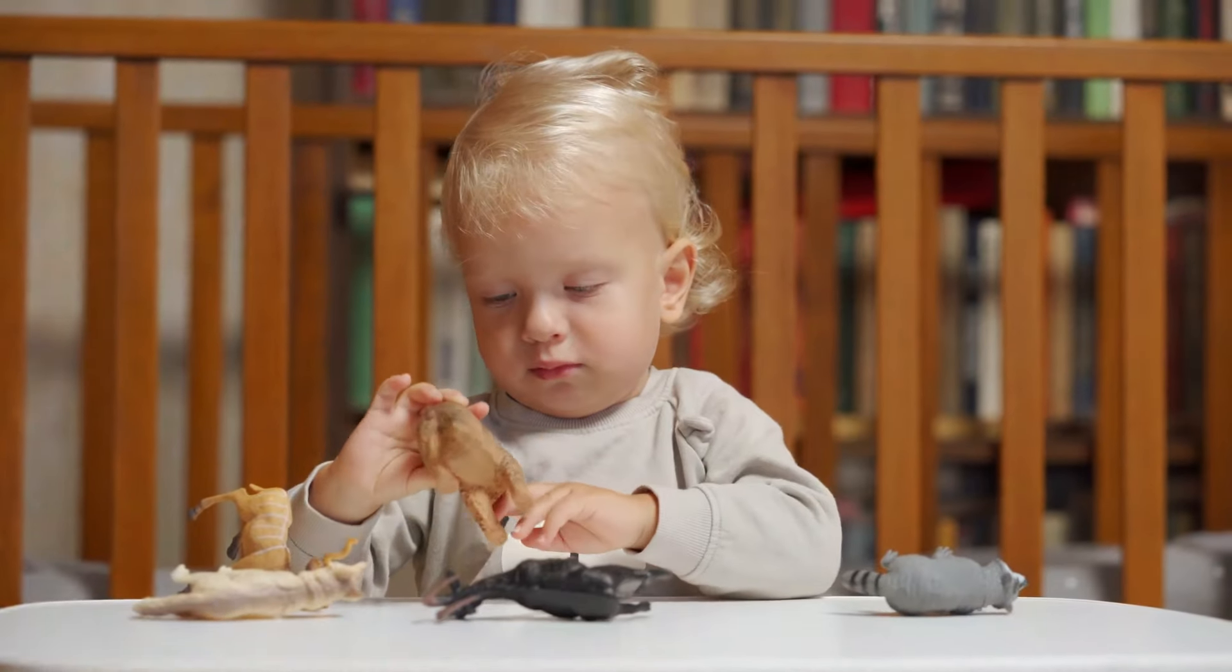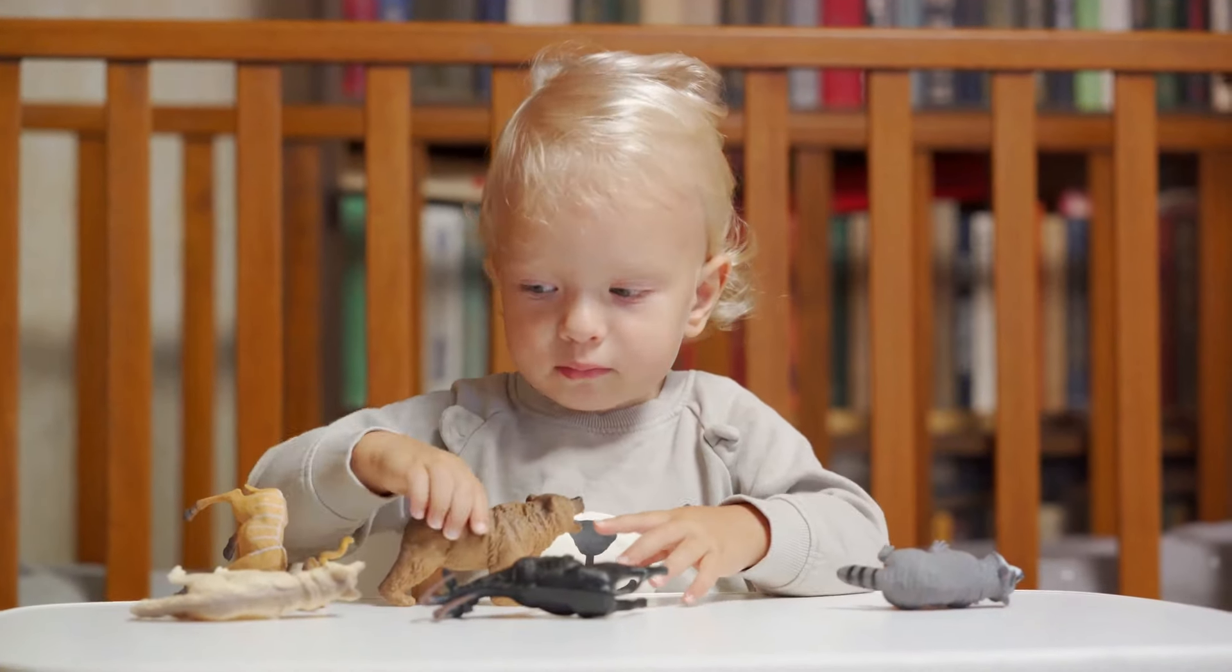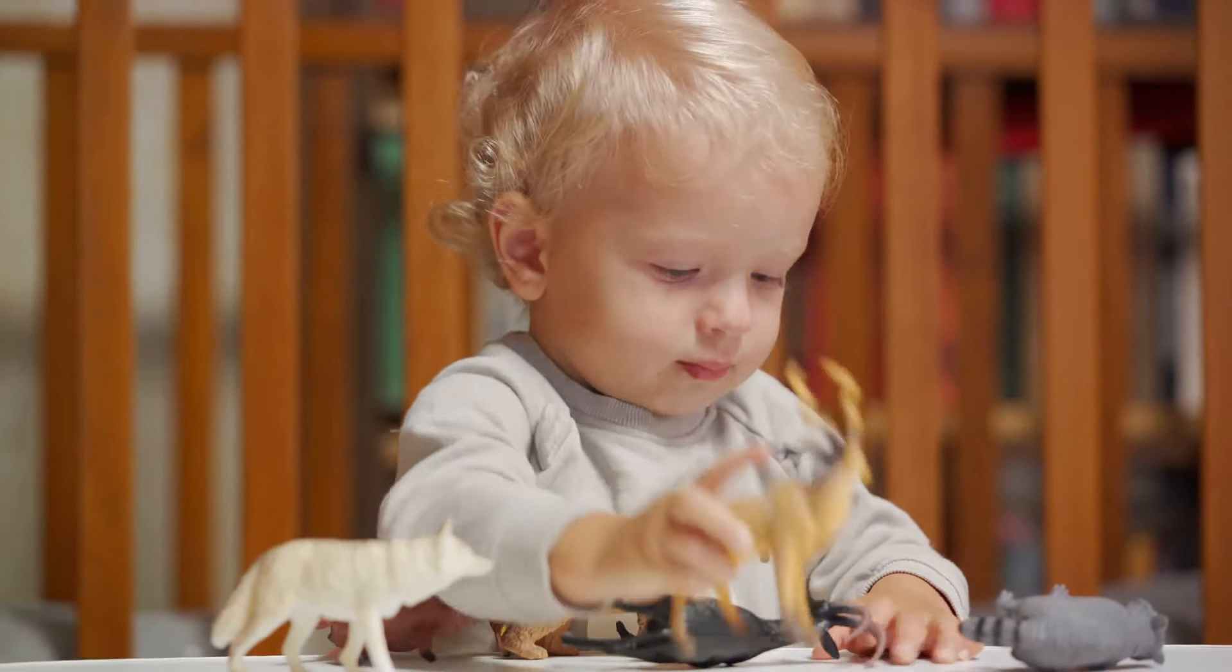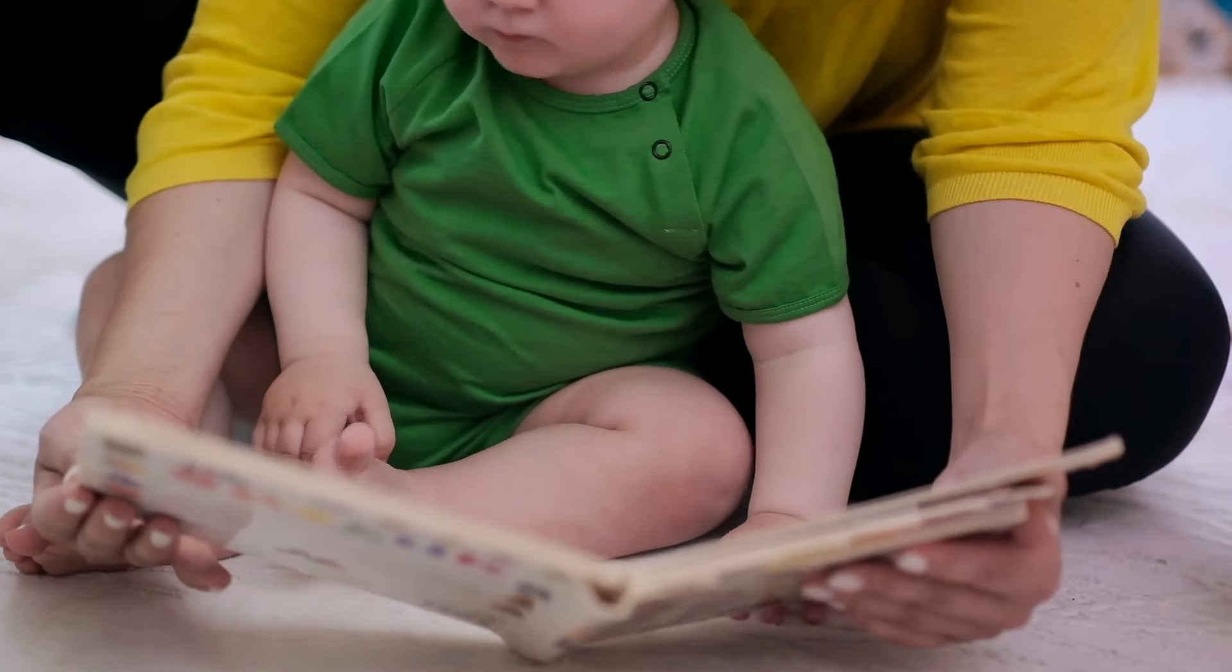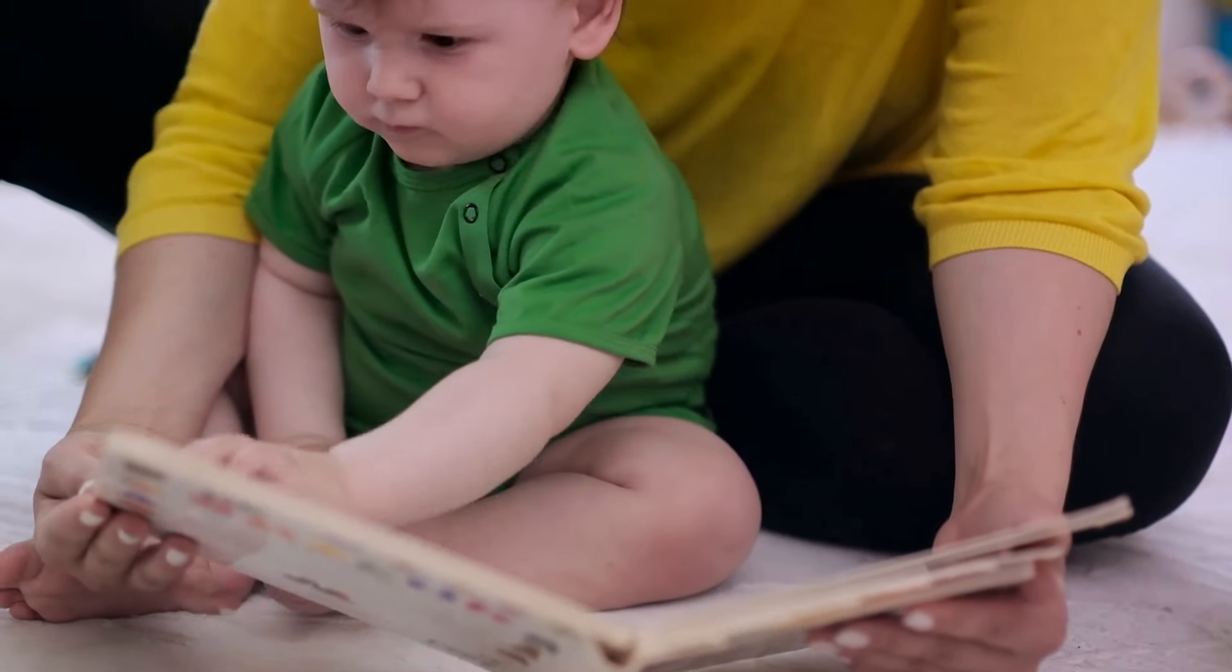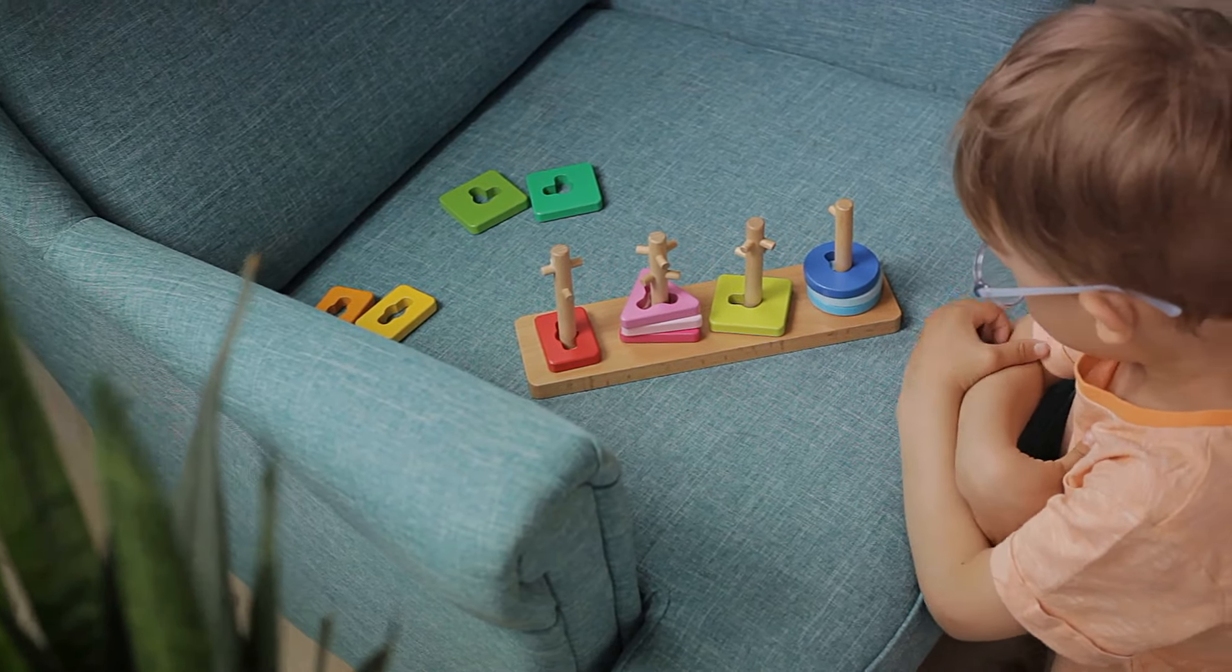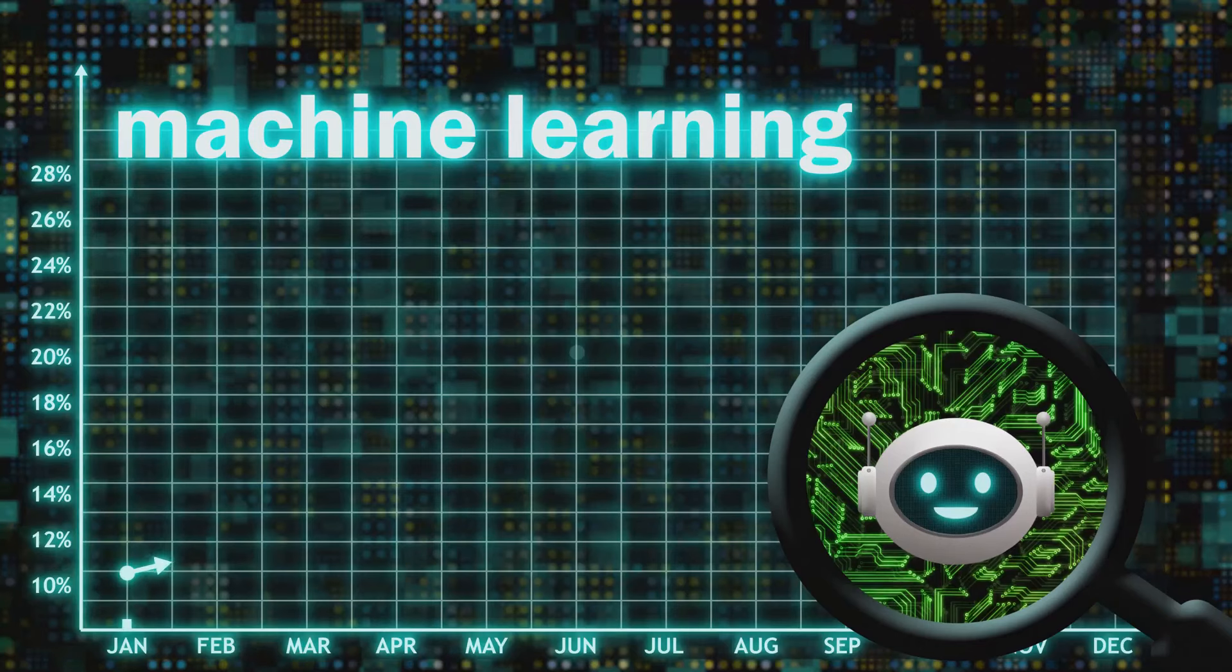Visualize this: teaching a preschooler to recognize animals. You present them with an image of a dog explaining, this is a dog. This is precisely the principle behind machine learning. The process involves a learning curve and gaining knowledge from past experiences, akin to a young child's journey.